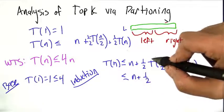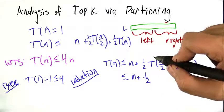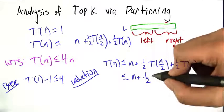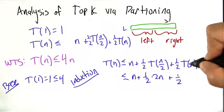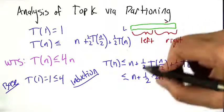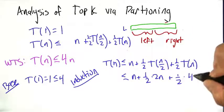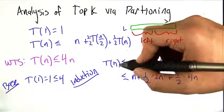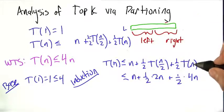So T(n/2), we're assuming, is upper bounded by 4n over 2, which is 2n. And this quantity, T(n), we're assuming is less than 4n. Now this is a little bit of a mathematical abuse of induction. We really don't want this to be n here because our inductive step is going to assume that it's true for everything smaller than n, not equal to n.